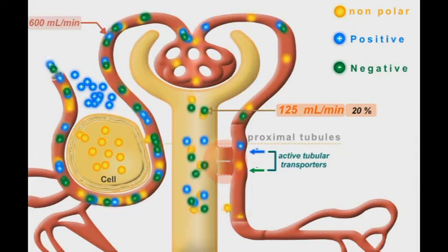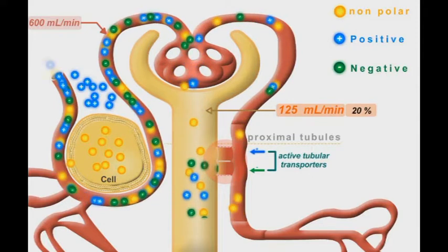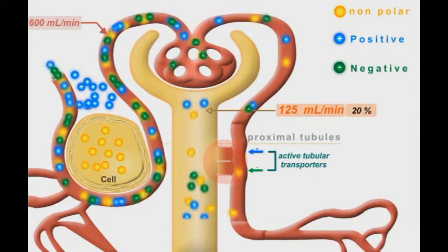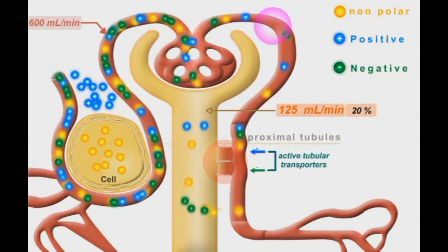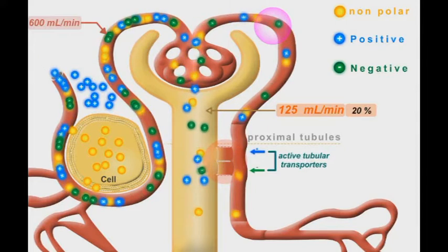So, what happens for the charged drug molecules that didn't have the chance to be filtrated by the glomeruli? These drug molecules flow into the afferent arterioles and reach the capillary plexus around the nephric proximal tubule.